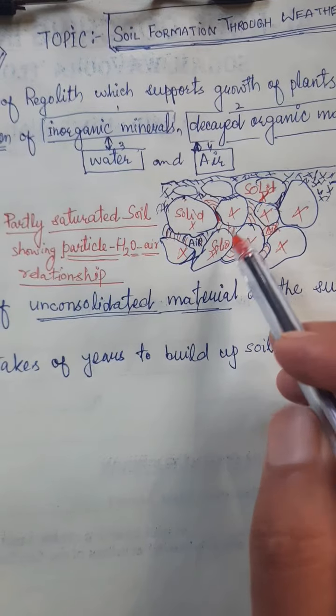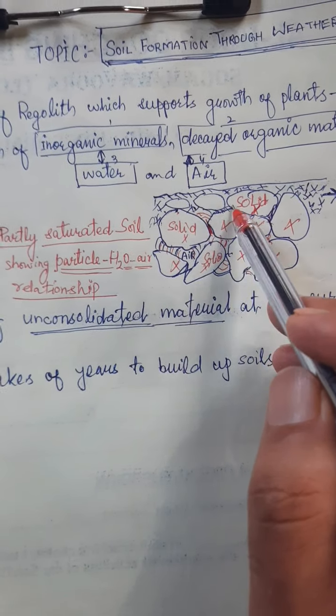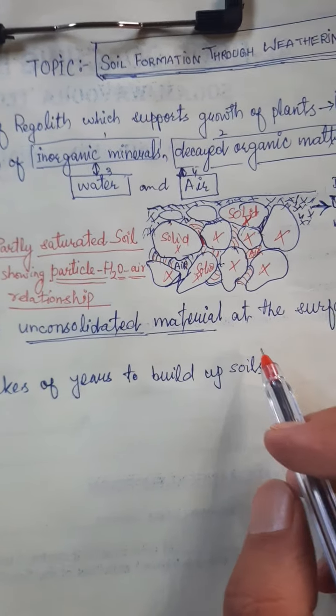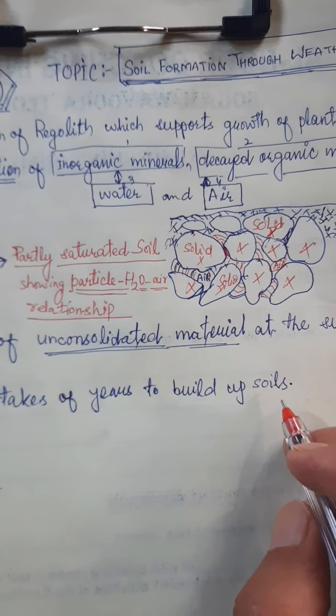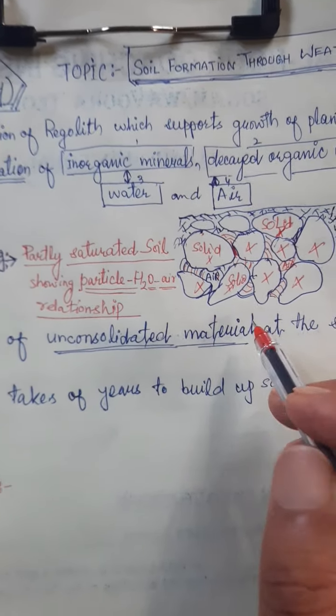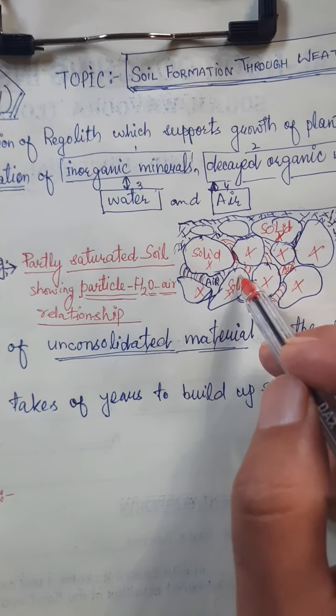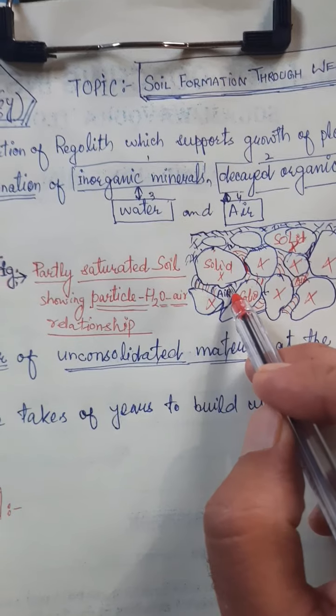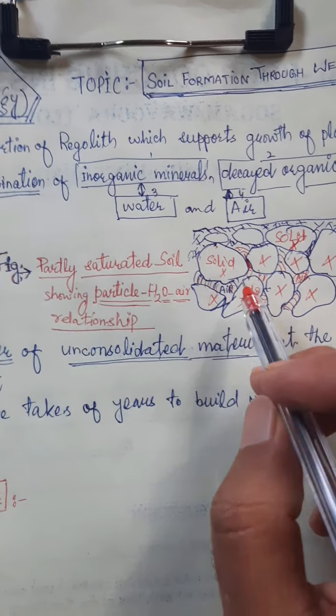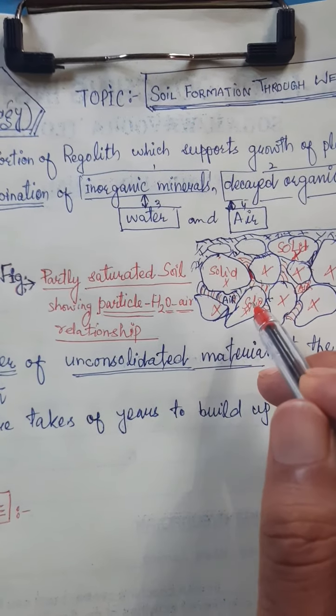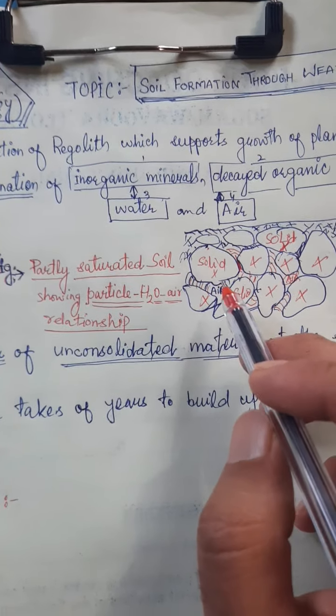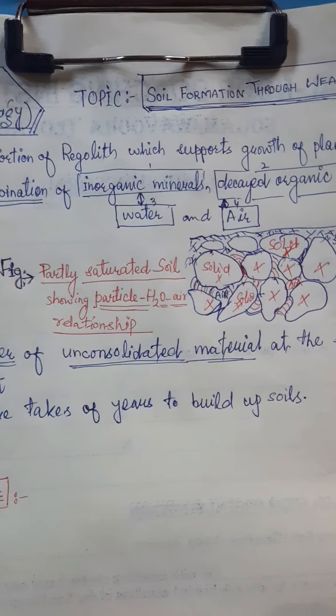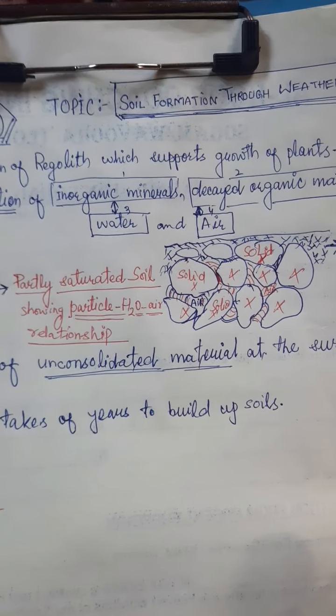In partly saturated soil, saturation occurs within the pores between soil particles. In these voids and openings between soil particles, there are other constituents - that is water and air. So soil is a combination of inorganic mineral fragments, decayed organic matter, water and air.